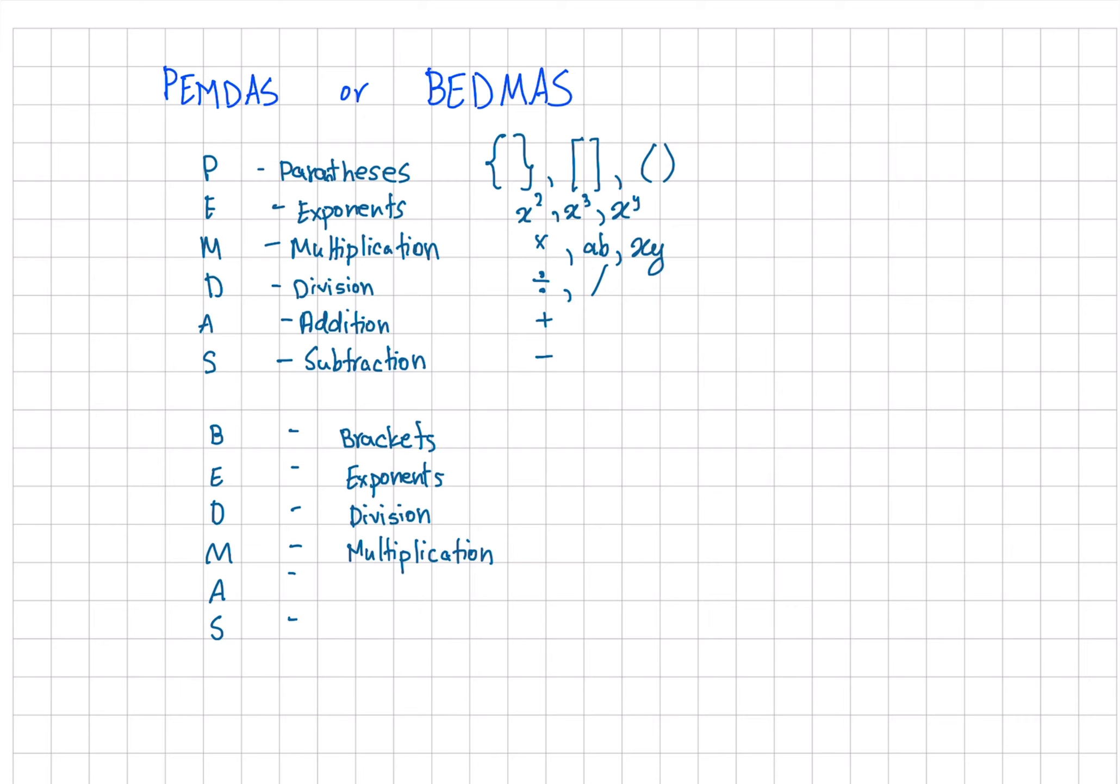Brackets is curly brackets, large brackets, or small brackets. Exponents is raising a number to a power. Division is the division symbol or fractions. Multiplication is a times symbol or just two variables next to each other. Addition is plus sign and subtraction is minus.